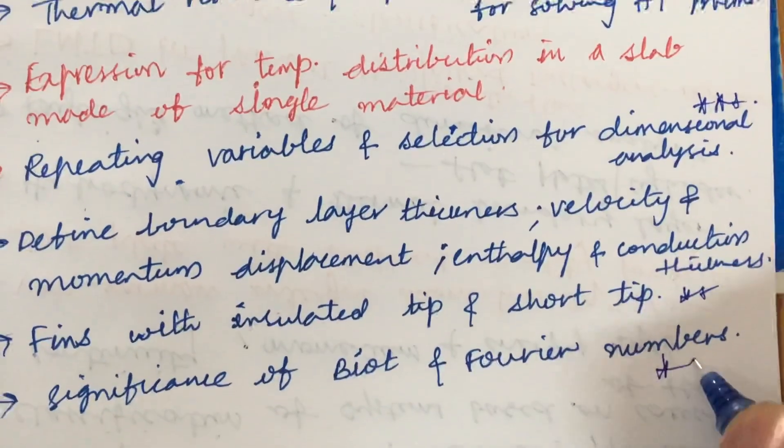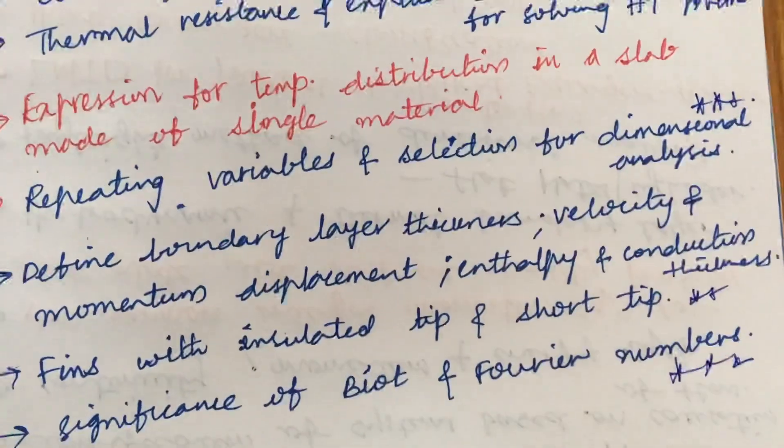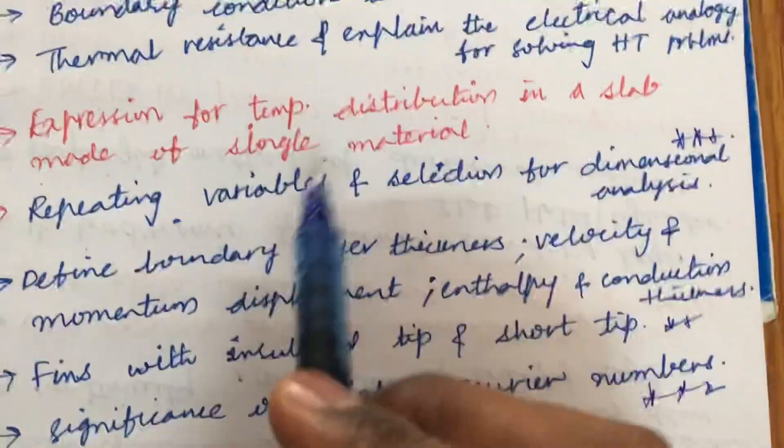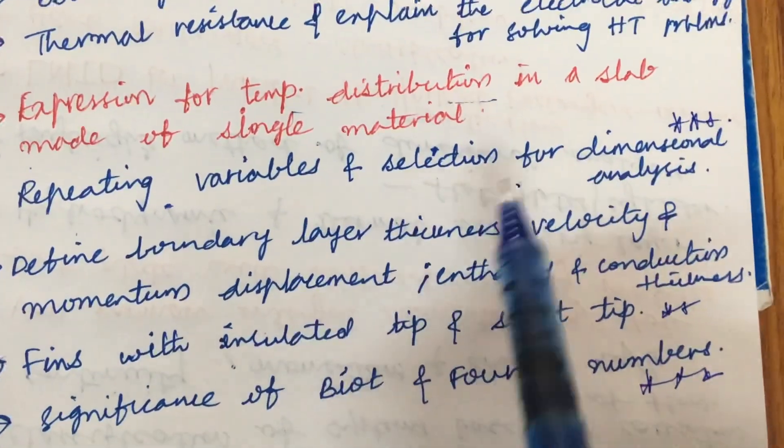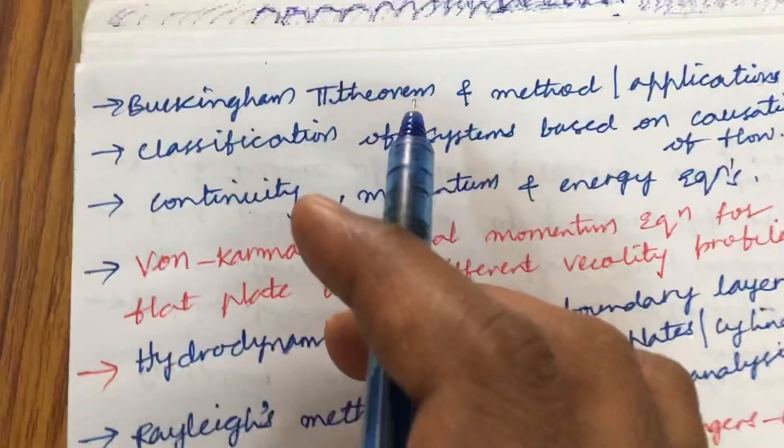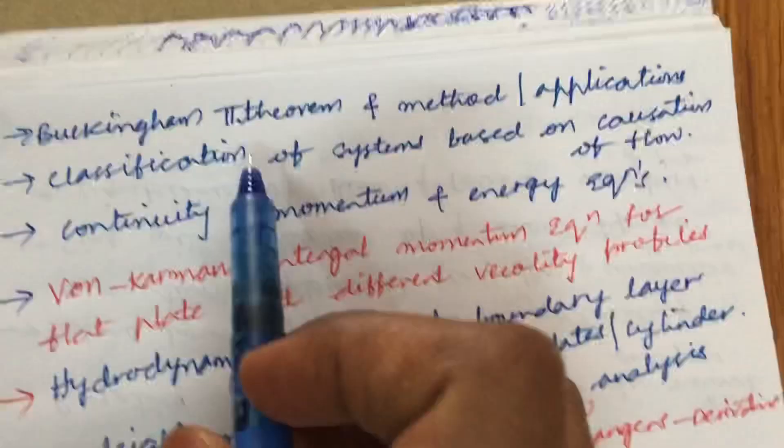Later, the fins with insulated tip and short tip, explain as well as explain the significance of Biot and Fourier numbers is also one of the five mark questions. Make sure to work accordingly to score a good mark.